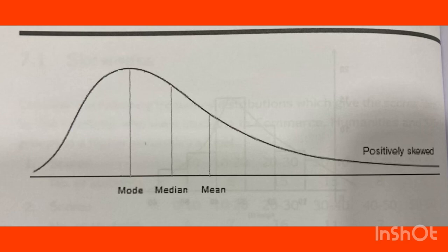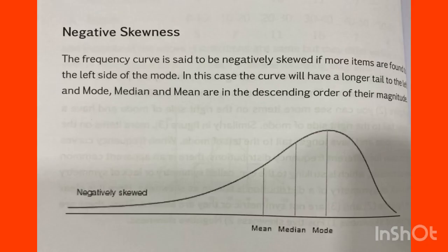For negative skewness, the frequency curve is negatively skewed if more items are found to the left side of the mode. In this case, the longer tail is to the left side. The mean, median, and mode are in descending order.